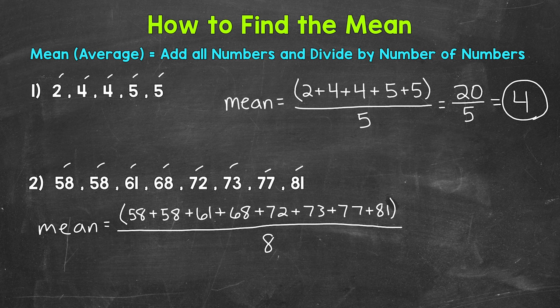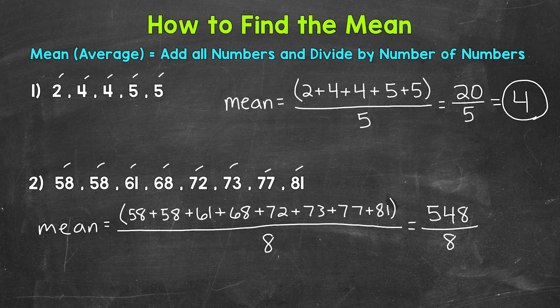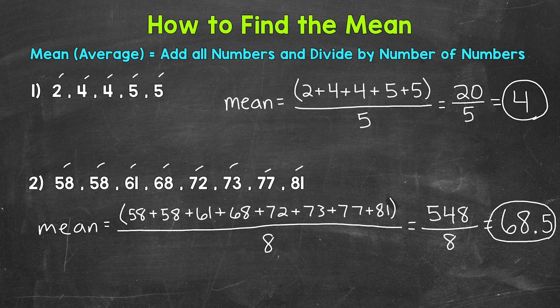Now we can calculate the sum of those numbers, and it's going to be 548. And then we divide by 8 to get our mean. 548 divided by 8 gives us a mean of 68 and 5 tenths. So 68 and a half is our mean for number 2.